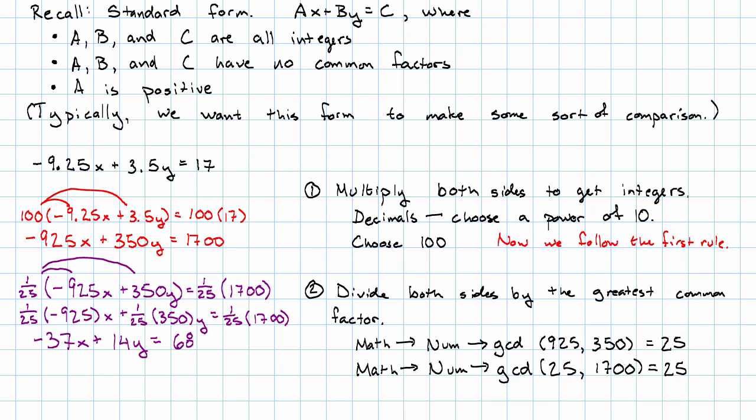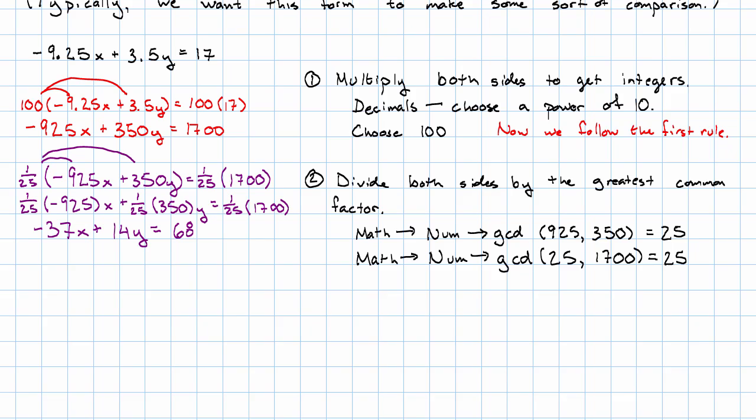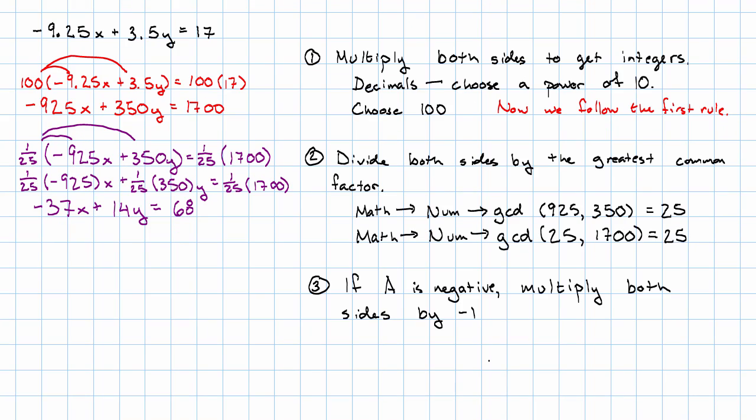So now we're following the first rule and the second rule. Third rule is easiest to get. If A happens to be negative, as it does in this case, we'll multiply both sides by negative 1.